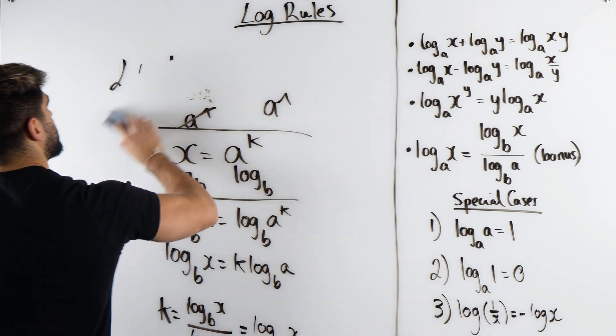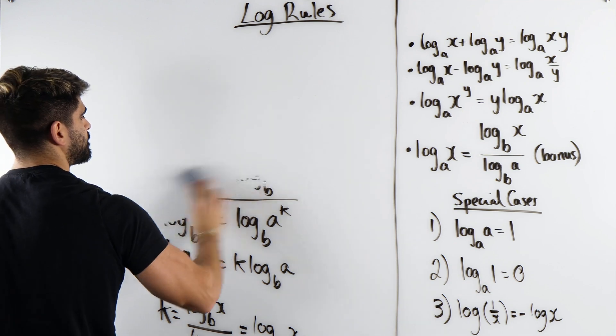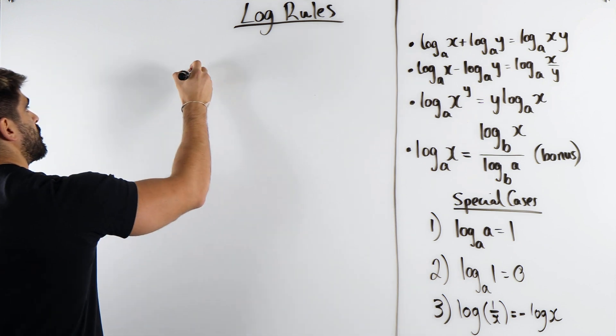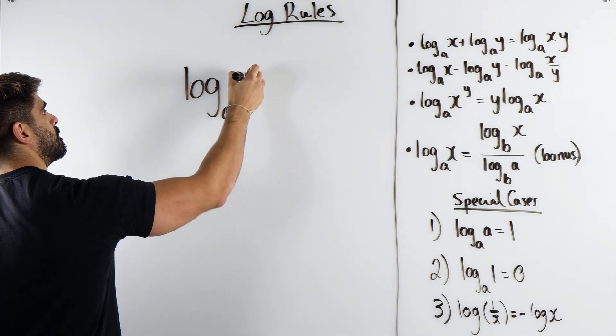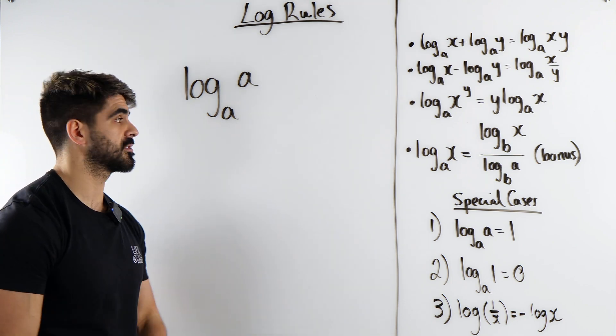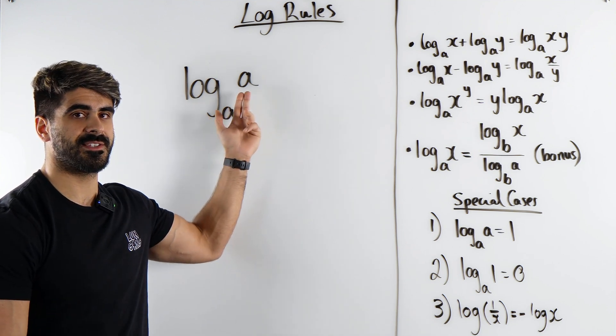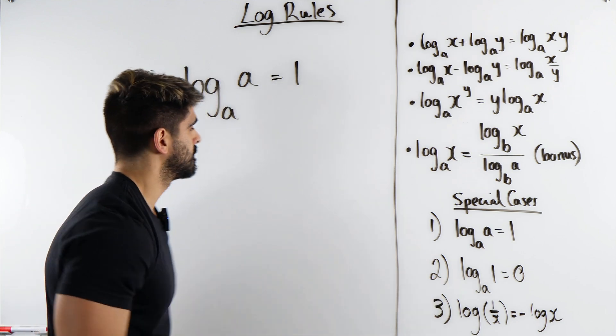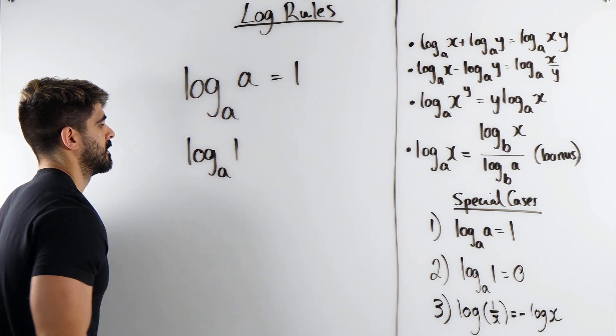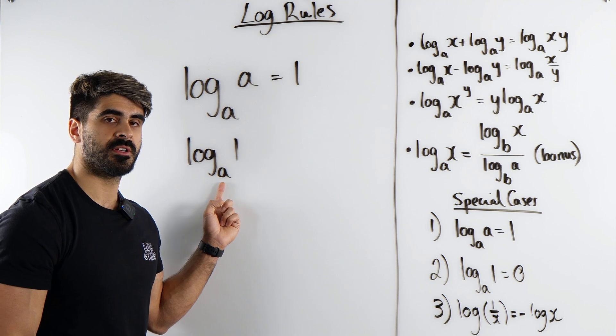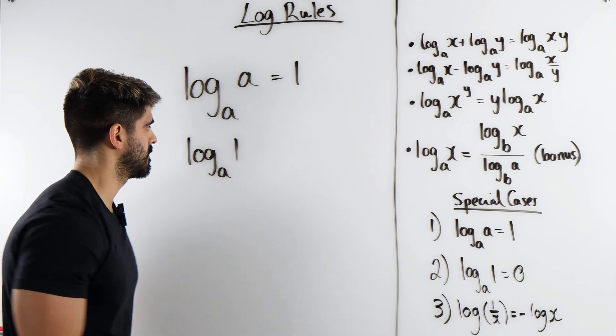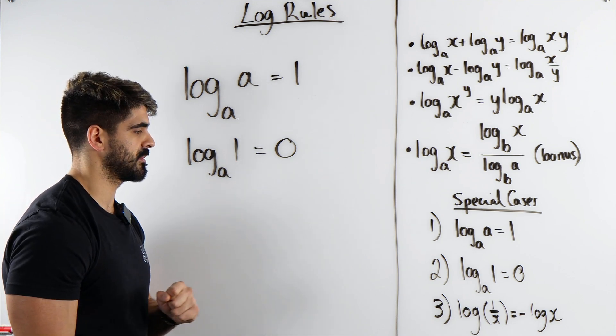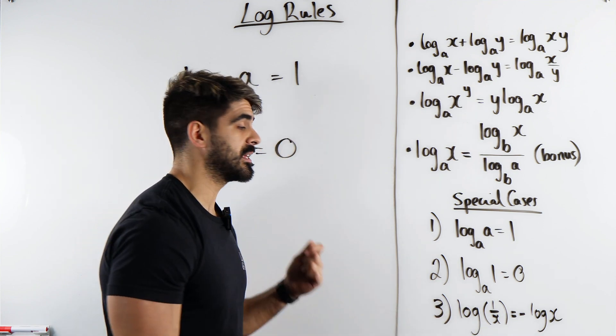Now there's some special cases that you guys need to be fully aware of and be able to spot every single time. Log base A of A. Remember what a log asks us. It asks us this to the power of what is this? A to the power of what is A? That is one. This one, log base A of 1. A to the power of what is 1? Well anything to the power of 0 is 1. That's why it's 0. A to the power of 0 is 1. A has to be positive.